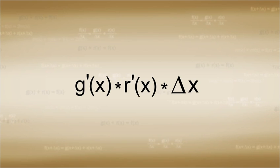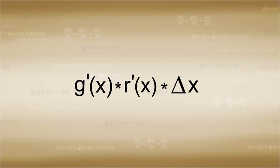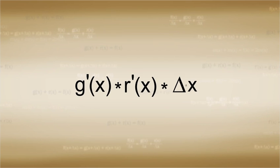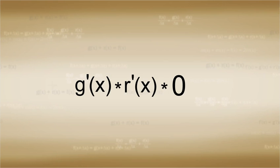If g(x) and r(x) are functions which have derivatives, then their derivatives are some finite numbers between positive and negative infinity. This means that g'(x) or r'(x) is multiplied with a number that tends towards zero as Δx is made smaller. And so the whole problem left over ultimately becomes zero.